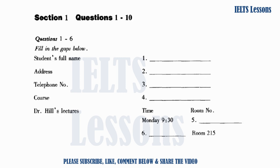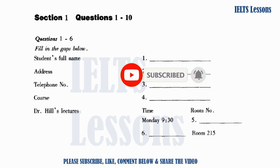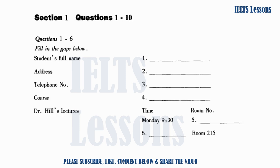Section one. Miss Wong is going to register for her first year's social science course. As you listen, fill in the gaps numbered one to six. First, you will have some time to look at questions one to six. Now listen carefully. Answer questions one to six.